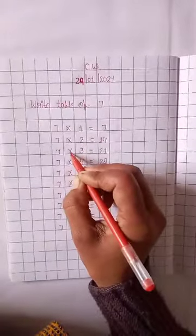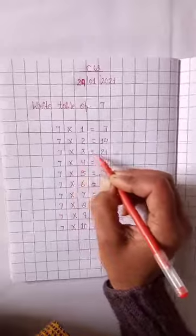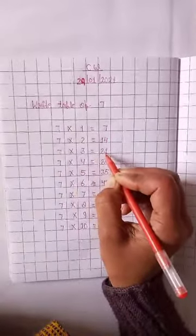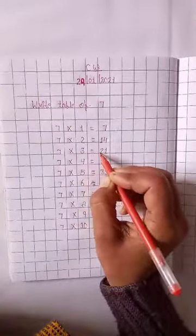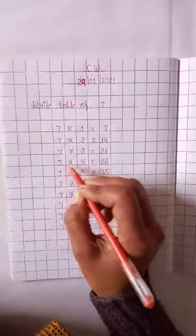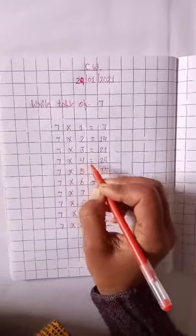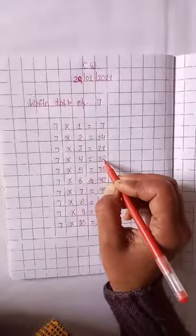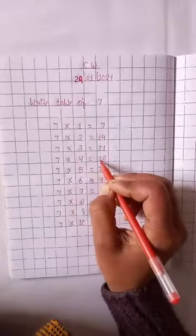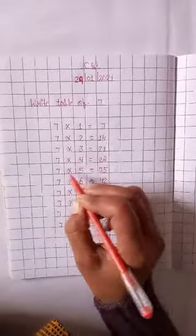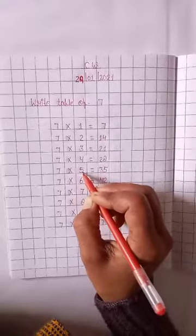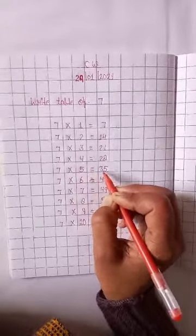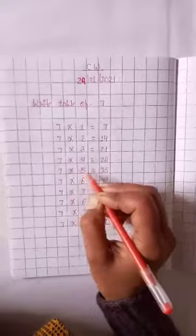Seven multiplication, three times is equal to twenty-one. Seven, three times, twenty-one. Seven multiplication, four times is equal to twenty-eight. Seven, four times, twenty-eight. Seven multiplication, five times is equal to thirty-five. Seven, five times, thirty-five.